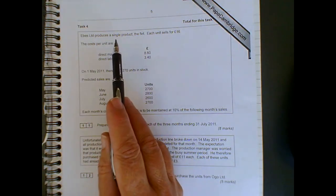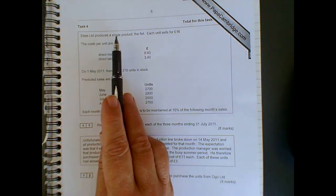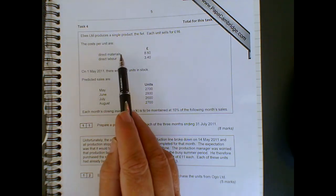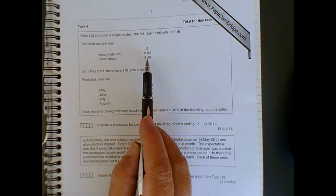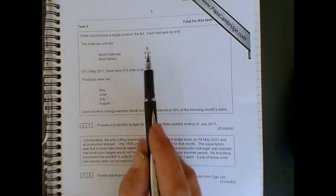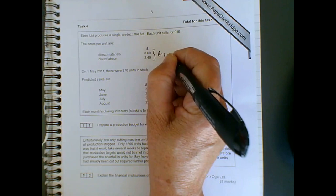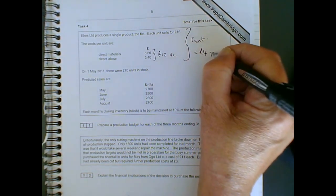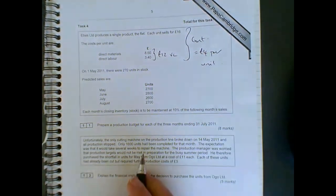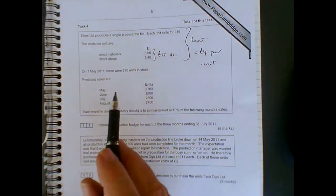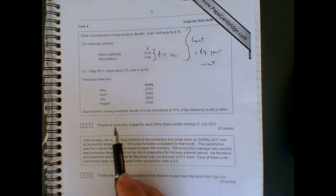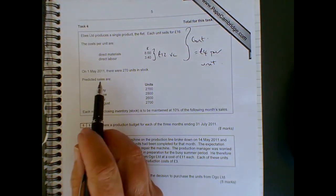We're given some information about what EBS Limited does. It produces a single product called the FLET. Each one sells for £16, and the unit costs are £8.60 for materials and direct labour £3.40. So we've got a total of £12 in variable costs, which means that the contribution is £4 per unit. That's not entirely useful for a production budget because we're only interested in units, which is the first part of this question, but the contribution will come in handy later.